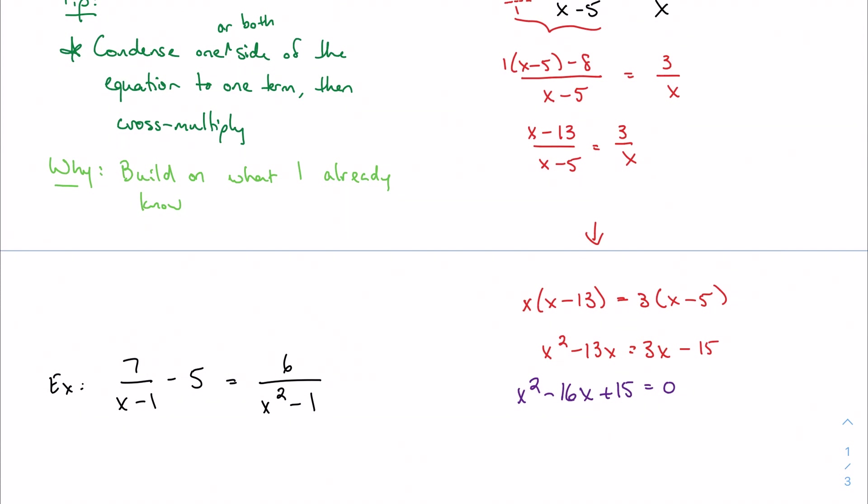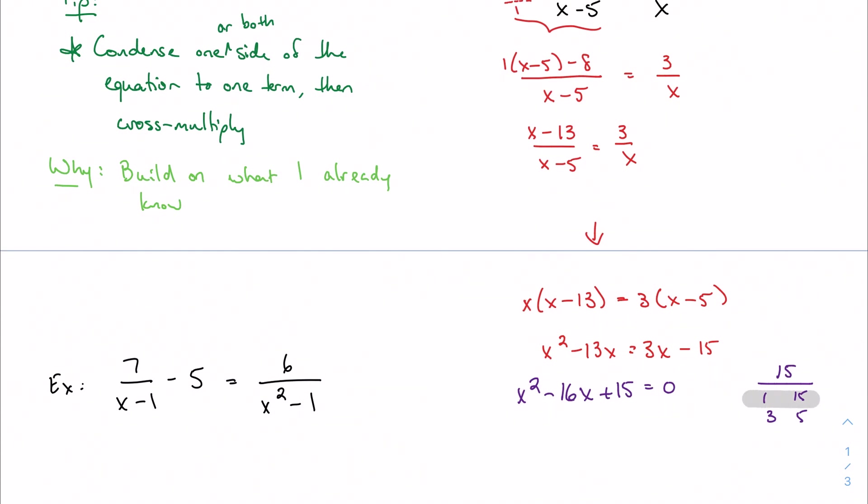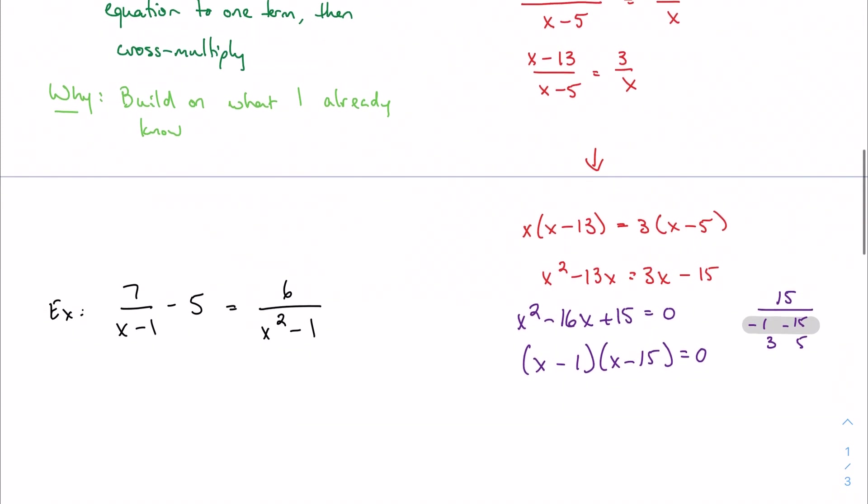I could go right to the quadratic formula, but it's easier to factor if I can. So let's check for that first. I'm looking for factors of 15 that add up to 16. 1 and 15, 3 and 5, right? So my options are going to be, really the only option I have is 1 and 15. Negative 1 and negative 15 to be exact. So this factors into x minus 1, x minus 15. And of course, if you remember, I'm going to split up and solve. So this becomes x equals 1 and x equals 15.